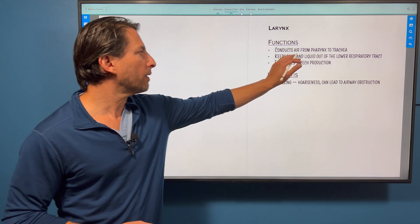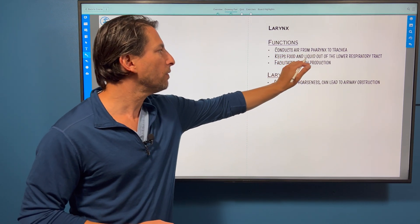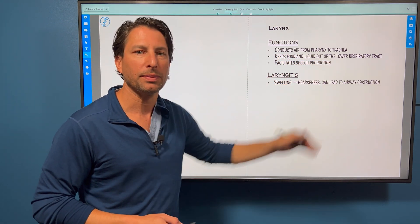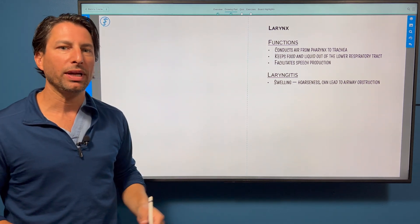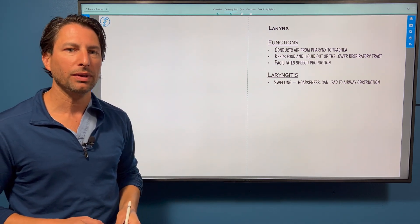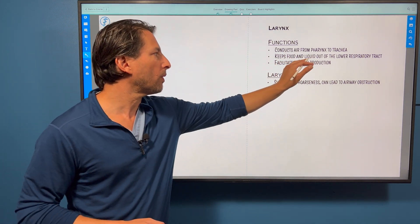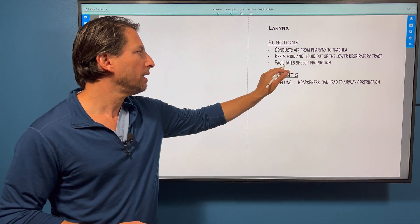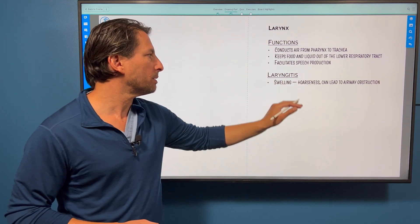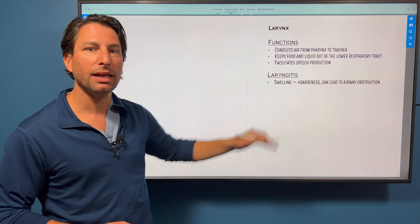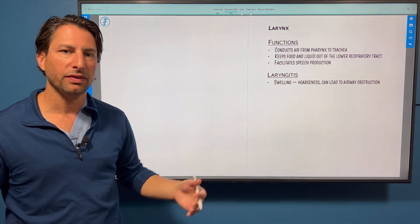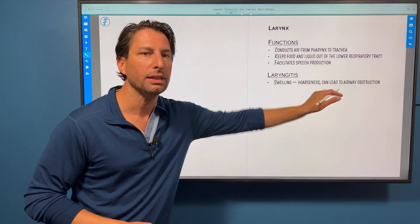Larynx conducts air from pharynx to trachea, keeps food and liquid out of the lower respiratory tract. Aspiration is a key cause of pneumonia. We see that in stroke patients. It's really important to have good integrity of the larynx, and it facilitates speech production. With laryngitis, you can get swelling, manifesting with hoarseness, but can also lead to airway obstruction.